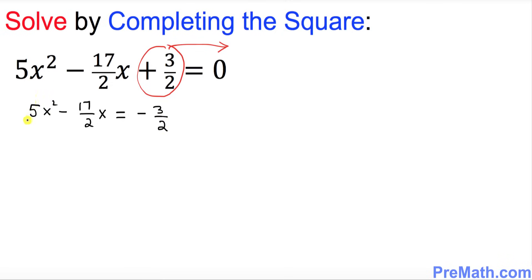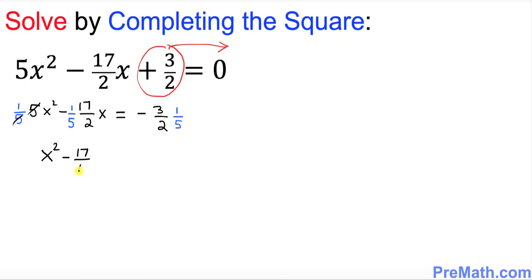The next step — we must make sure that our leading coefficient is 1, and this is 5. We are going to make it 1 by simply multiplying by one-fifth, which is the same as dividing by 5. Multiplying everything across the board by one-fifth, the 5 and one-fifth cancel, so we end up with x squared — leading coefficient 1 — minus 17 over 10x, equal to negative 3 over 10.